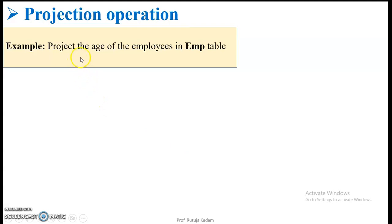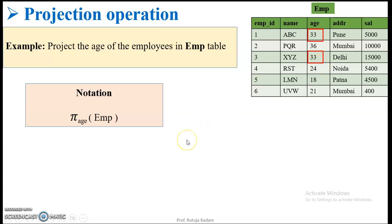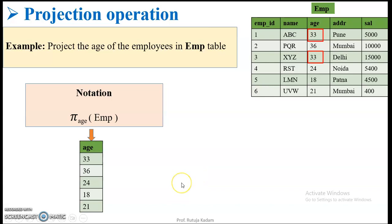The next example is projecting the age of the employees from the employee table. In the attribute list there will be age. Now observe that there are two records of similar age, so duplication exists and one record will be discarded. There are six records in the table, but when projecting on age we find two duplicate values, so only five records remain. The value 33 appears twice but is considered only once, giving us 33, 36, 24, 18, and 21 as the distinct values.